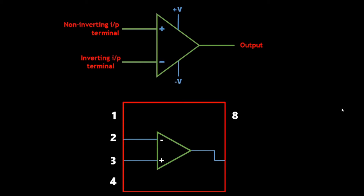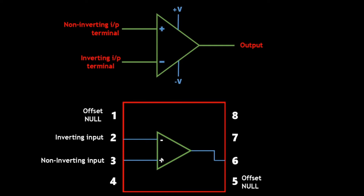The MuA741 has 8 pins. Pins 1 and 5 are used for offset, which will be discussed in another video. Pin 2 is the inverting input (negative symbol). Pin 3 is the non-inverting input (plus symbol). Pins 4 and 7 are the bias voltages. Pin 8 is not connected, and pin 6 is the output. This is the schematic of the MuA741 op-amp IC.